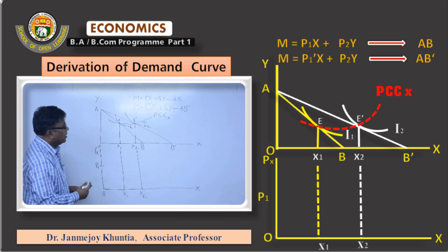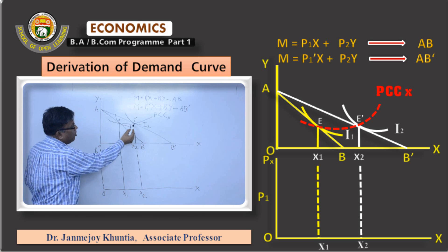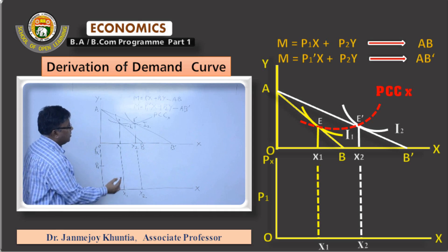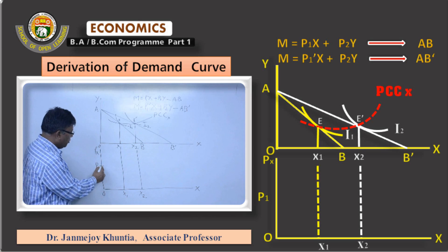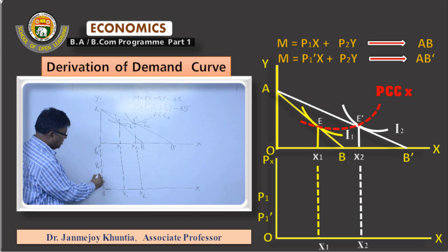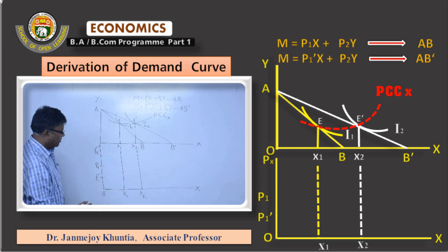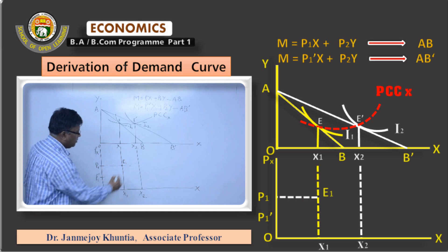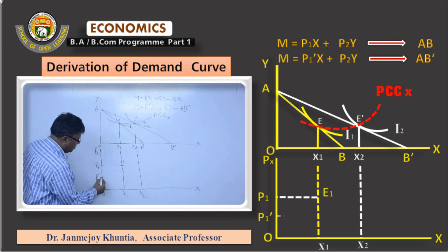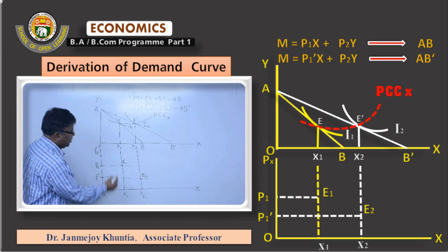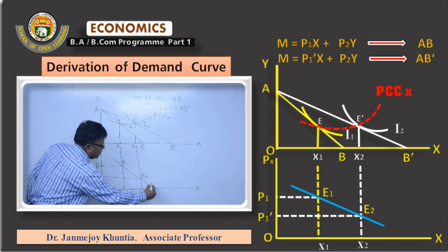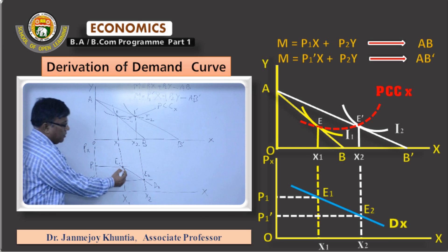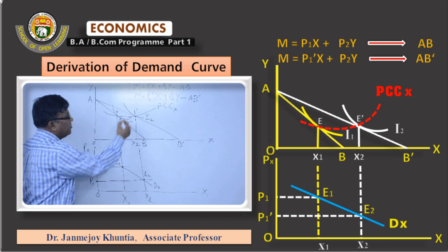Quantity X2 is associated with price P1 dash, which corresponds to point E dash on the upper panel on budget line AB dash. Since P1 dash is less than P1, level it below P1 on the vertical axis of the lower panel. Find the combination of X1 and P1 at point E1, and the combination of P1 dash with X2 at point E2. Join both E1 and E2 to get the demand curve DX, which is downward sloping. The demand for X is thus derived from the price consumption curve.